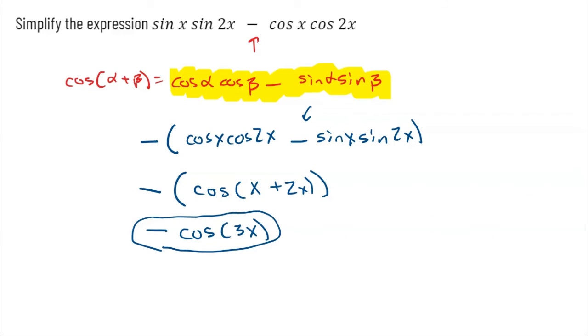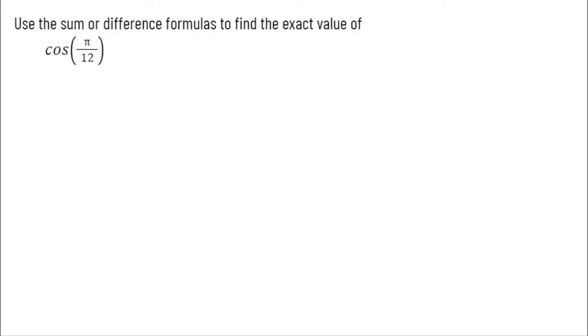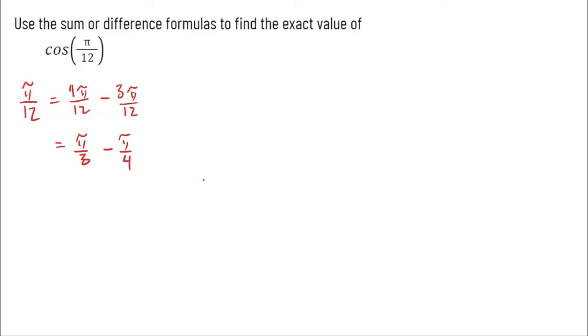In this final question, we're asked to use the sum or difference formula to find the exact value of cosine of π/12. We don't recognize π/12 from the unit circle the way we would π/3, π/6, or π/4. So let's see how to rewrite π/12: if I do 4π/12 minus 3π/12, that equals π/12. 4 twelfths reduces to π/3 and 3 twelfths reduces to π/4.